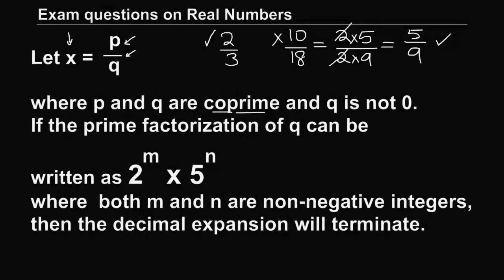In order to determine whether the decimal expansion will terminate, we must express the rational number as p by q where p and q are co-prime. If the denominator q can be expressed as 2 to the power m times 5 to the power n, where m and n are non-negative integers, then the decimal expansion will absolutely terminate.